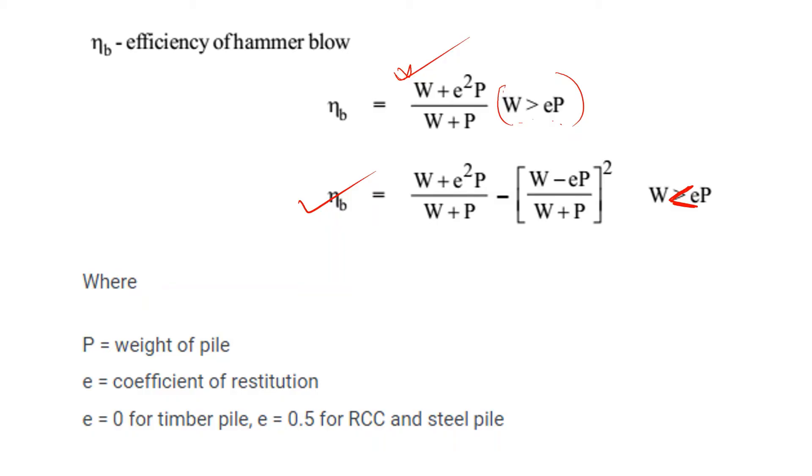e is the coefficient of restitution. And P is the weight of pile. If the weight of pile includes the pile cap and pile driver and dolly, all the weight is the total sum P. The coefficient of restitution describes how the equation is monitored.